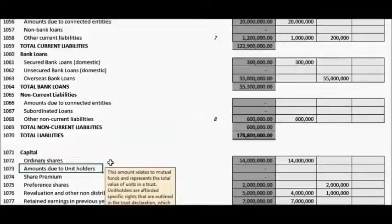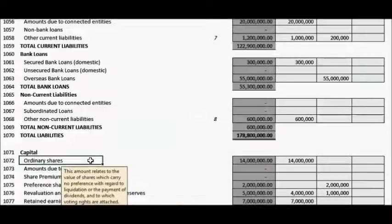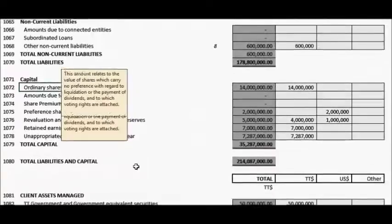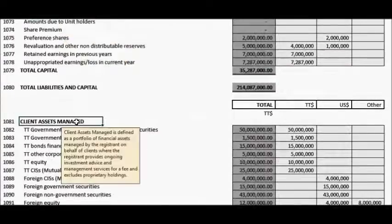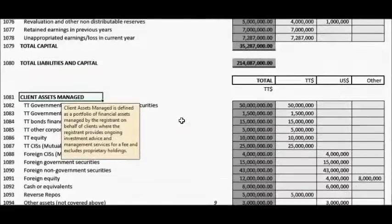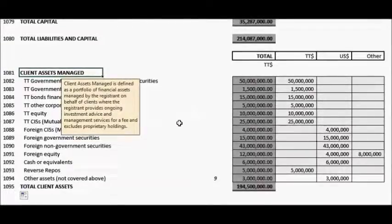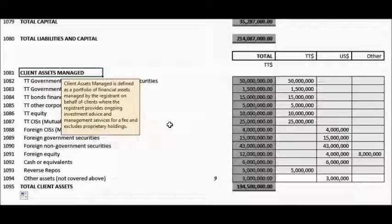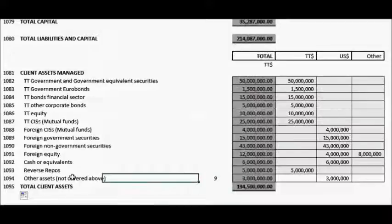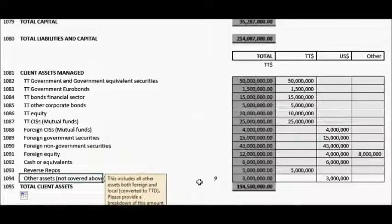Where a CIS is constituted in a corporate form, the total value of all its shares must be included in the ordinary shares line item. The Client Assets Managed section, for the purposes of this form, is defined as the portfolio of securities managed by the reporting entity on behalf of its clients. The reporting entity would also be providing ongoing investment advice and management services to the client for a fee. The values contained in this section should exclude the proprietary holdings of the reporting entity. All line items labeled Other must be supported by a breakdown within the Notes section.